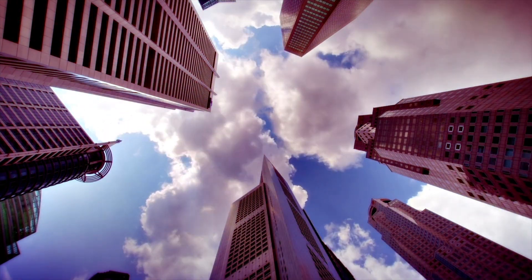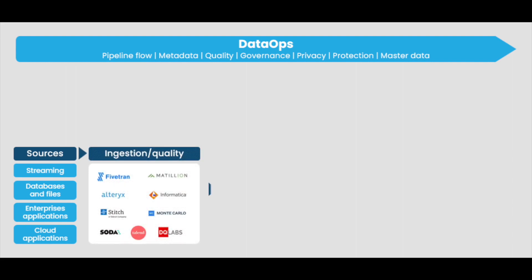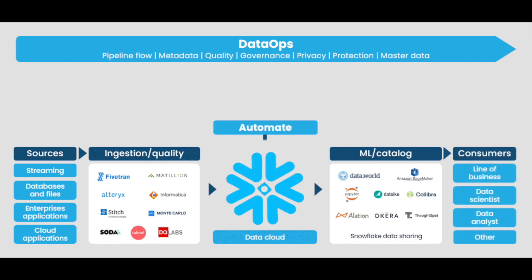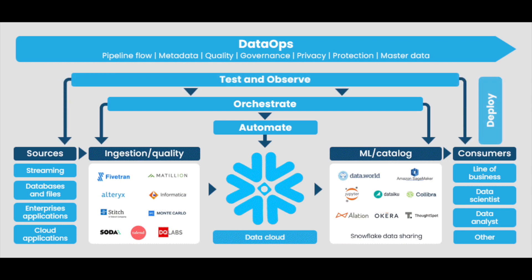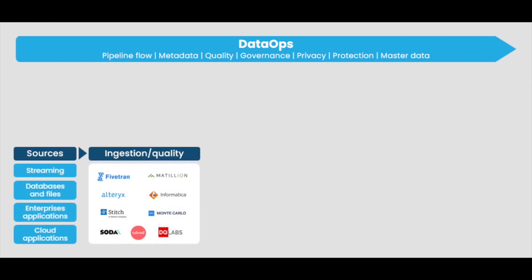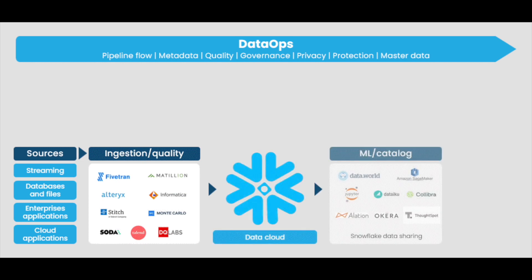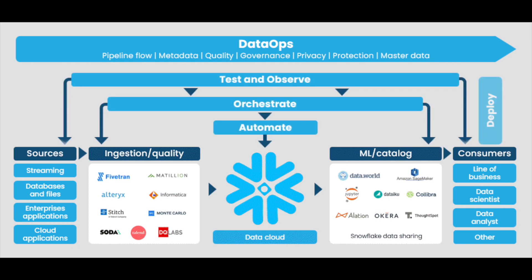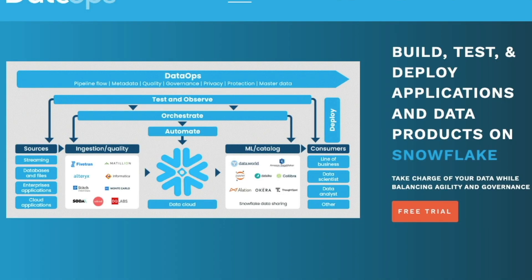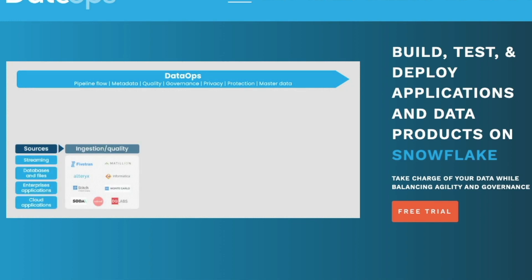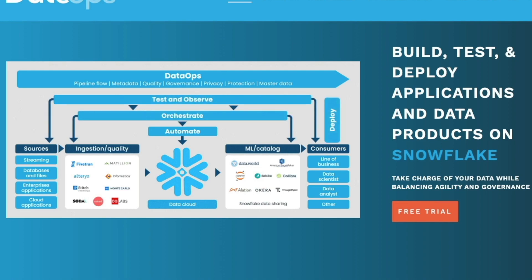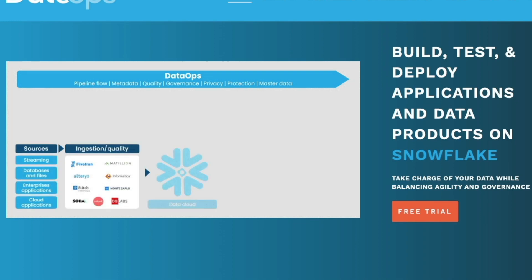This is where DataOps as a product comes into play. It's built on top of Snowflake and helps you build, test, and deploy applications and data products on top of Snowflake. It leverages the power of Snowflake behind the scenes but also integrates ingestion and data quality tools like Matillion, Fivetran, Stitch, and Informatica. On the consumption and governance side, there are connectors with Alation, DataIQ, and Calibra. It aims to tie together automation, orchestration of those different independent technologies, make logging transparent, and wrap automated testing around it all.